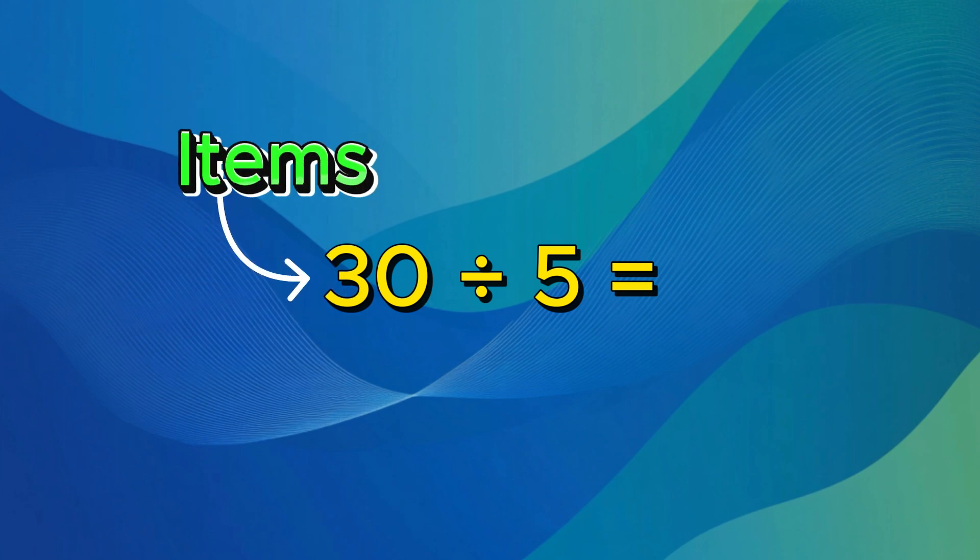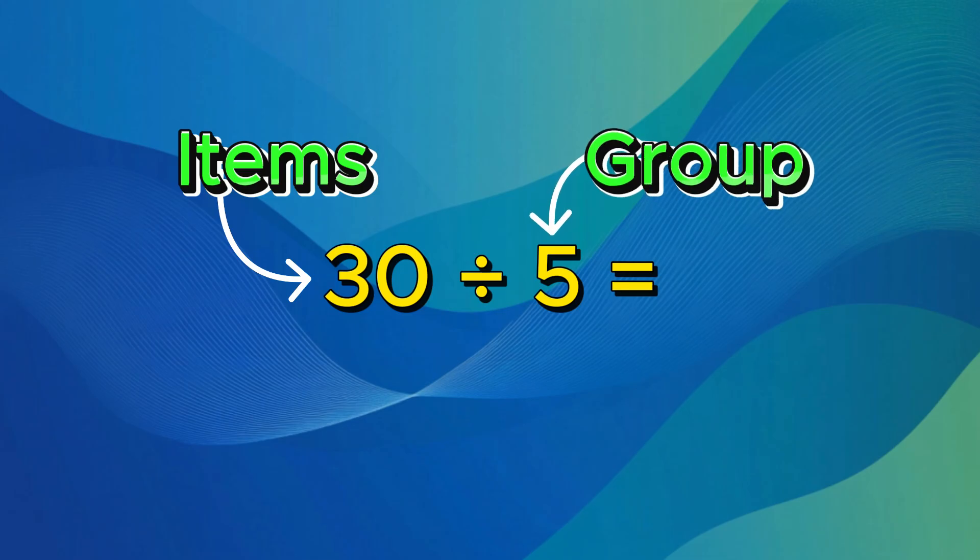Let's look at another example. What is 30 divided by 5? Remember, the way to think about this problem is, the first number is your items, like the cookies. And your second number is the group you're giving those cookies to.